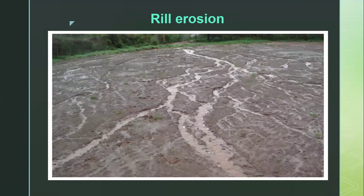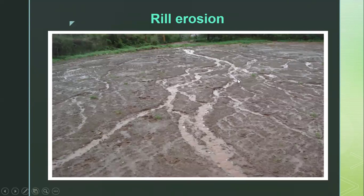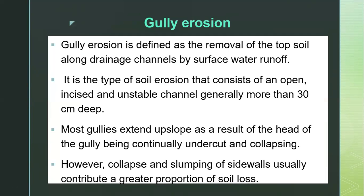This is how rill erosion looks like. As you can see, it is running water on bare land — land left empty with no vegetation cover — and due to rainfall runoff, this kind of erosion occurs. I hope it's clear about rill erosion.